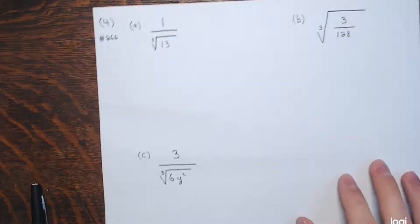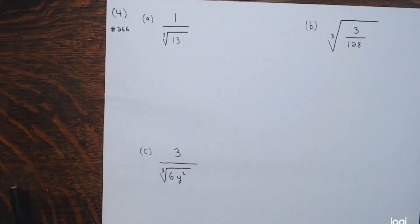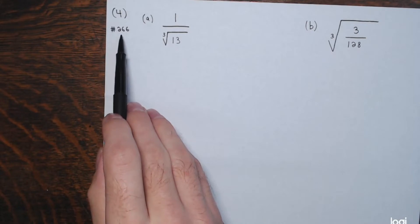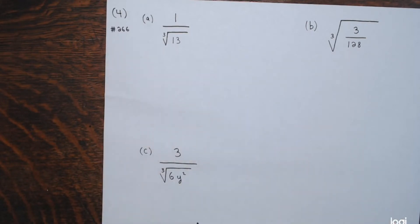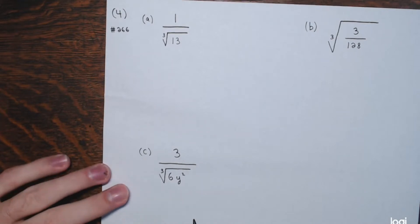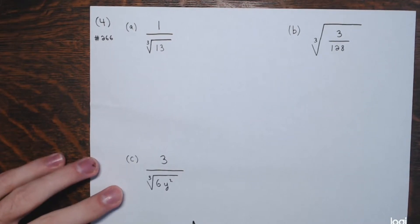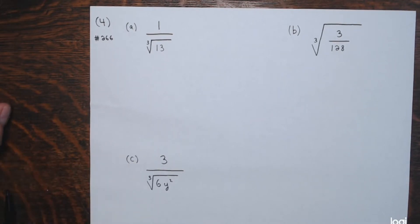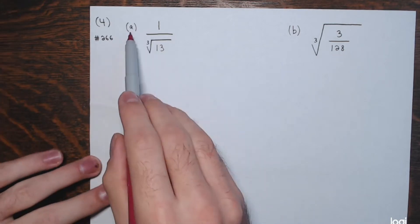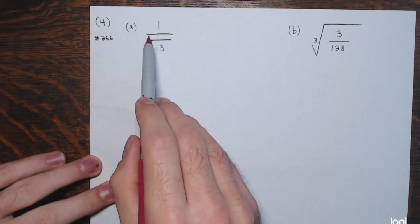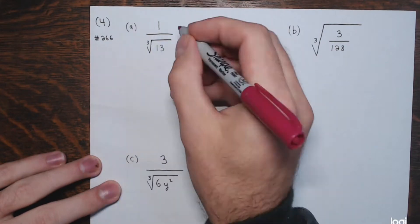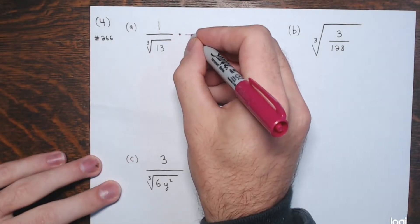Number 4 corresponds to exercise 266 from the text — pretty similar, all cube roots. Part a: we have 1 divided by the cube root of 13. Since 13 is already prime, I just need to multiply by the cube root of 13 squared to get the cube root of 13 cubed — a perfect cube. And 13 squared is 169.